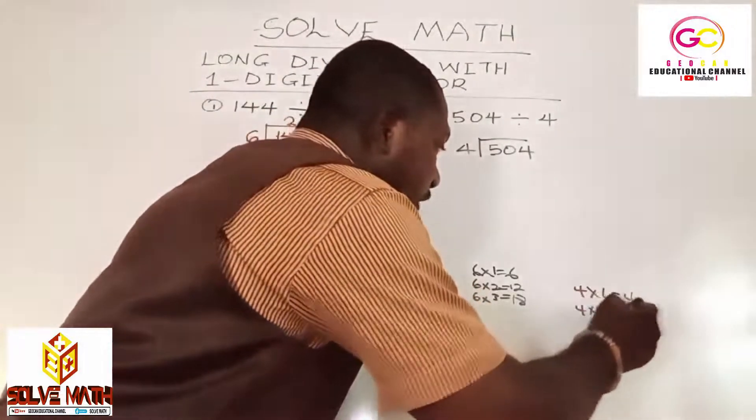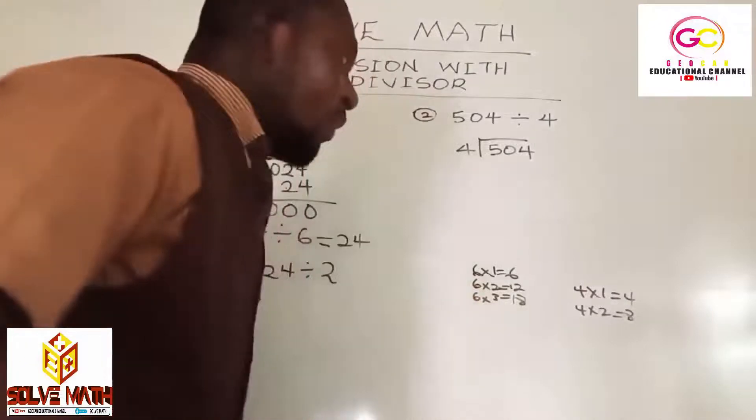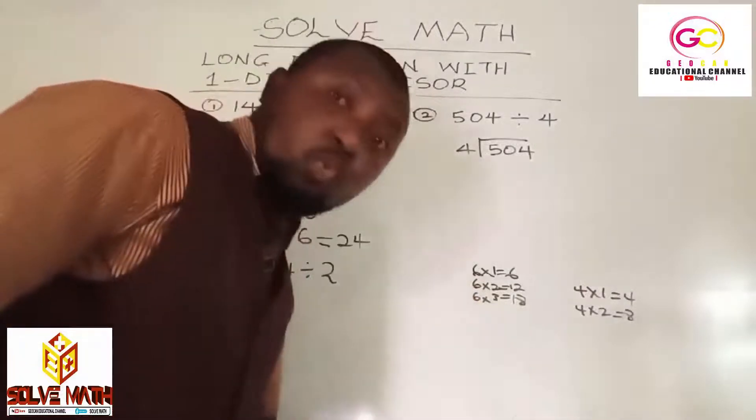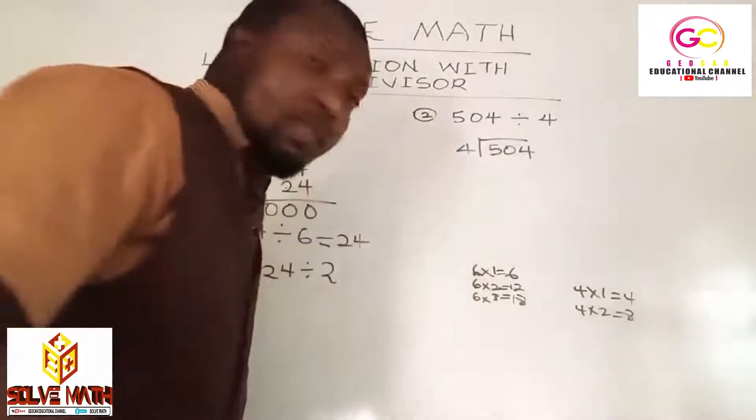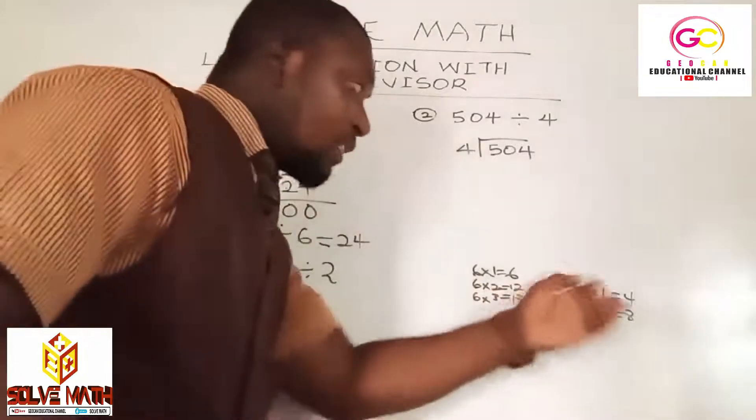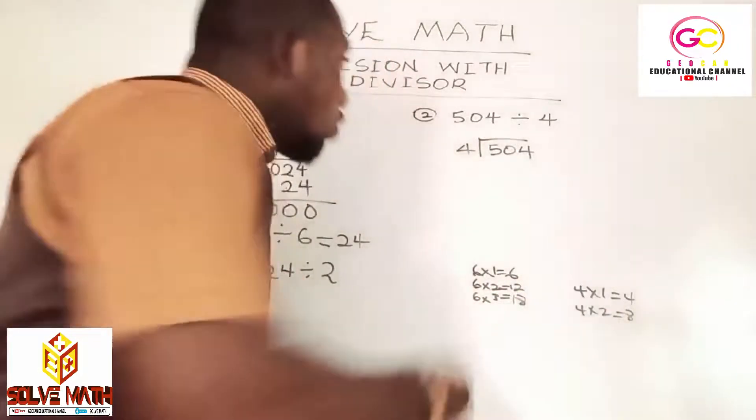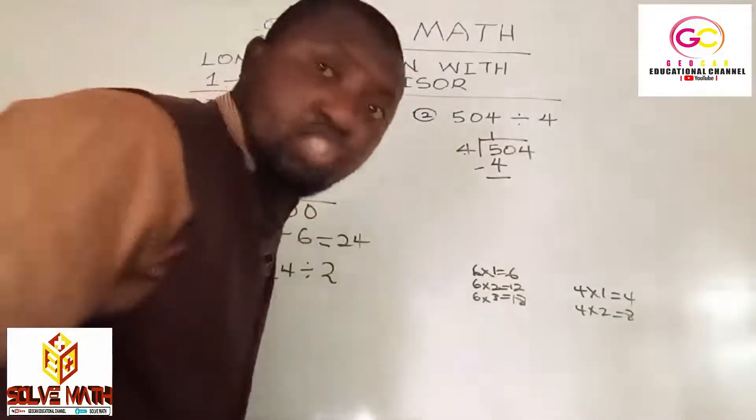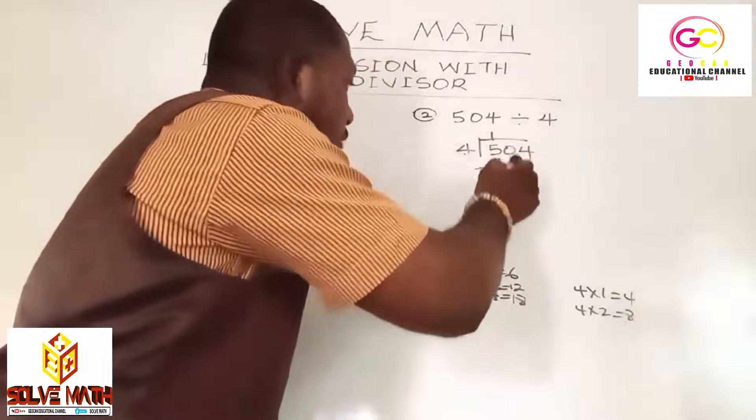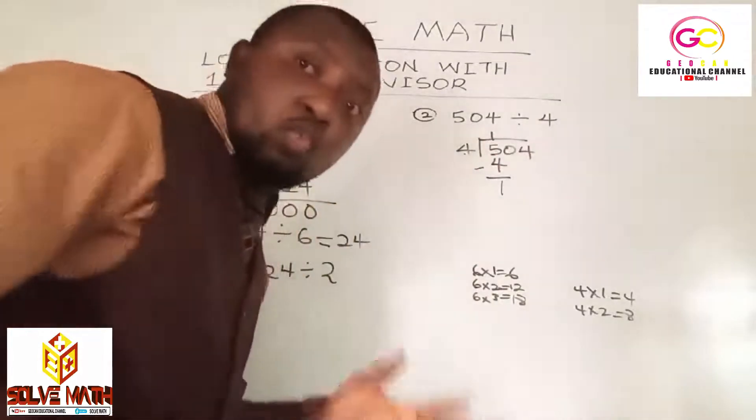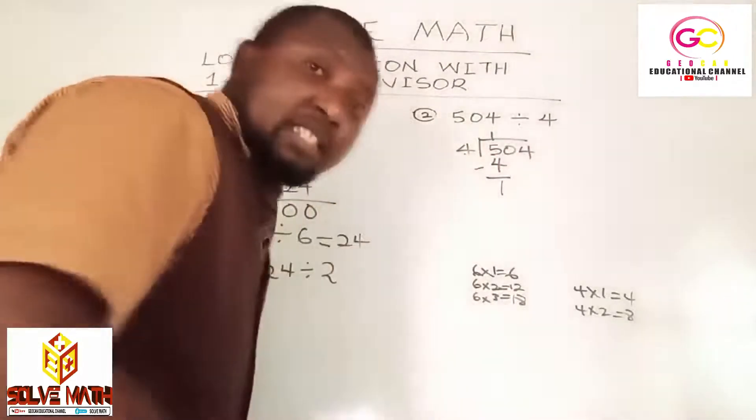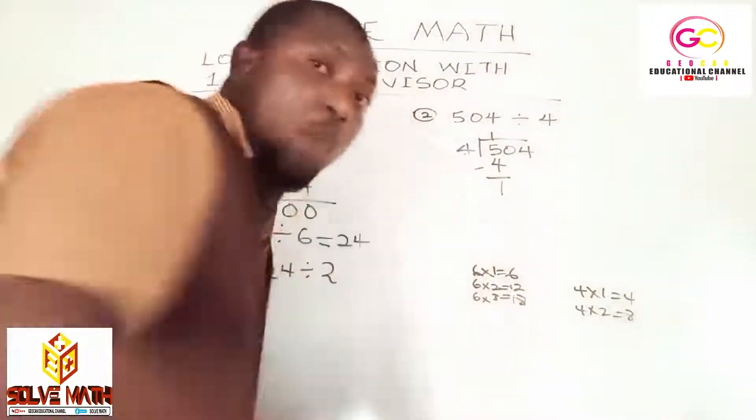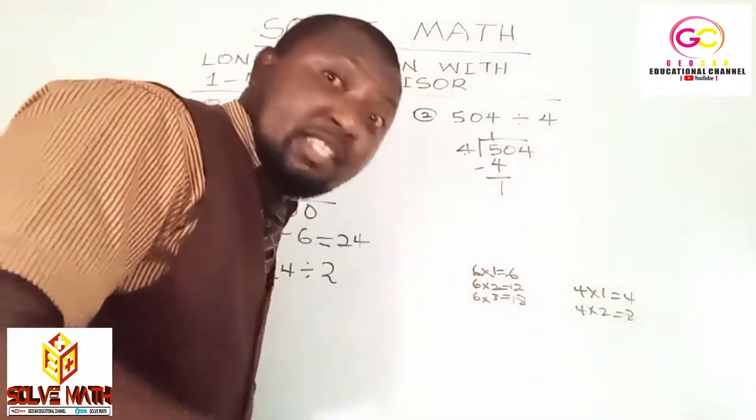4 times 2 is equal to 8. We can't choose 4 times 2 because it's more than 5. So we choose 4 times 1, which is 4. Quickly do your subtraction: 5 minus 4 is 1. What it means is that 4 will go into 5 once and will be left with a remainder of 1. Simple.